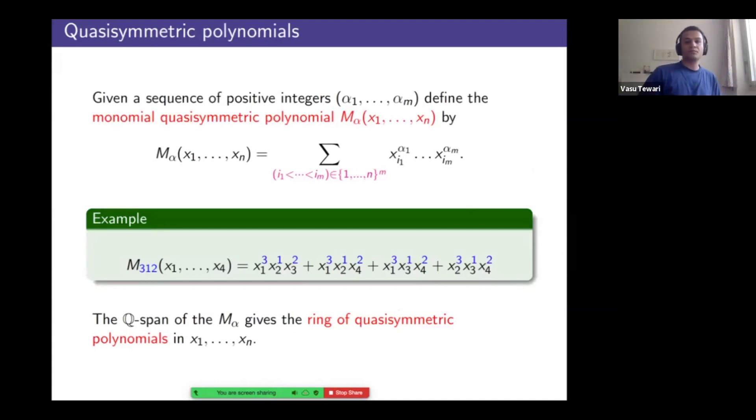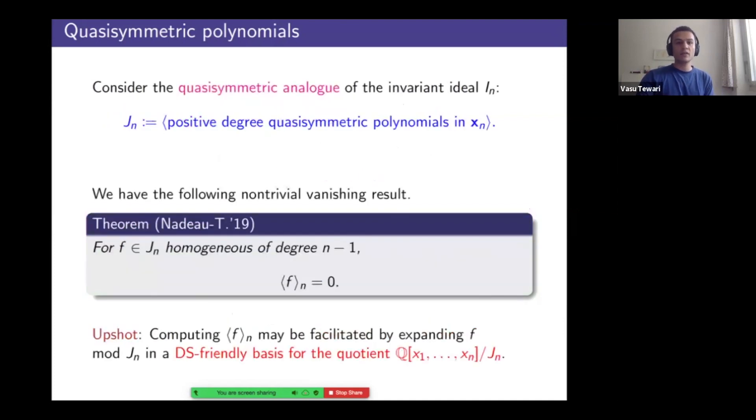Right. So monomial quasi-symmetric polynomials. So if I have a composition alpha 1 through alpha m, n variables, I'm going to sum monomials of the form x_{i1} to the alpha 1 all the way through x_{im} to the alpha m, where the indices increase strictly and they're in the range 1 to n. So here's m_{3,1,2}. Notice all exponents, they're 3,1,2. Notice all indices, they're increasing and lie in the interval 1 through 4. If you take the Q-span of these polynomials, what you get is the ring of quasi-symmetric polynomials in n variables.